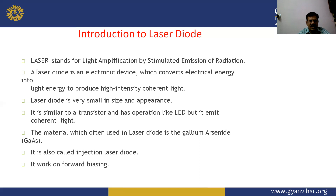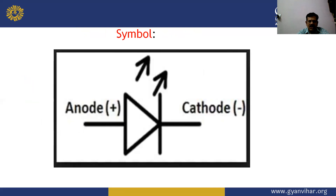The laser diode works under forward bias conditions. When external forward bias is applied, the diode conducts. Its symbol has two terminals — the anode (positive) and cathode (negative) — with arrows indicating the emission of coherent light.